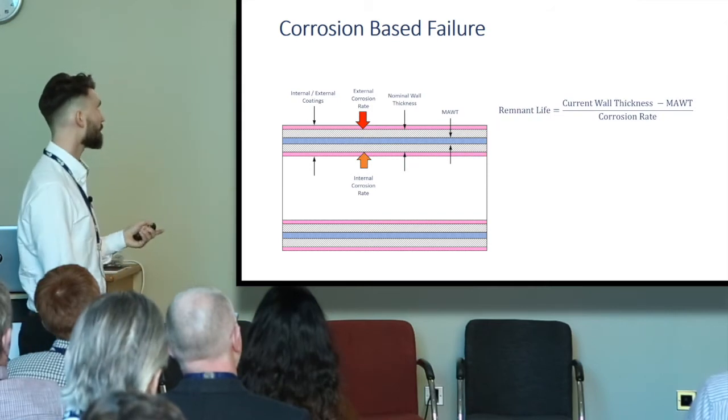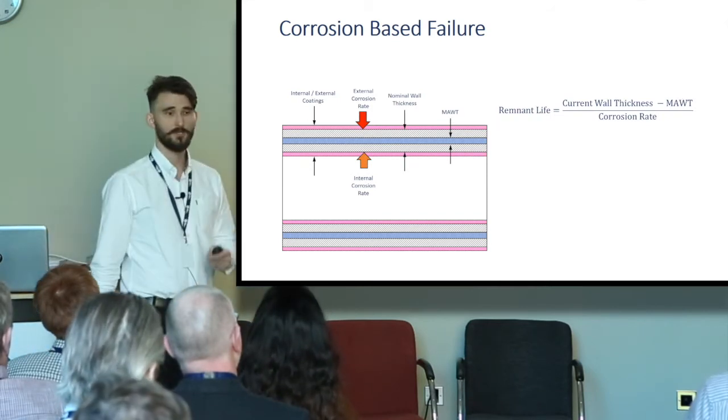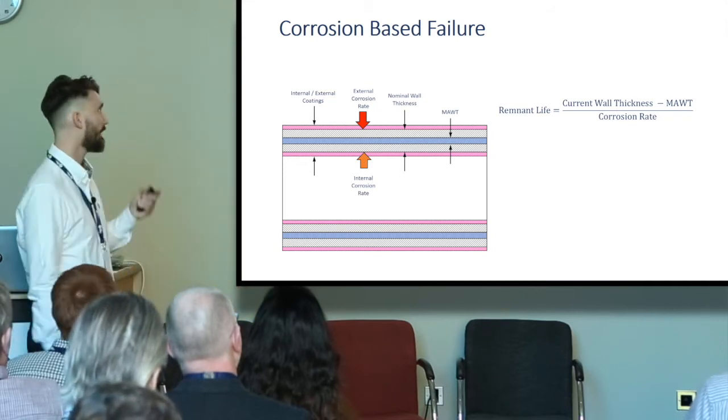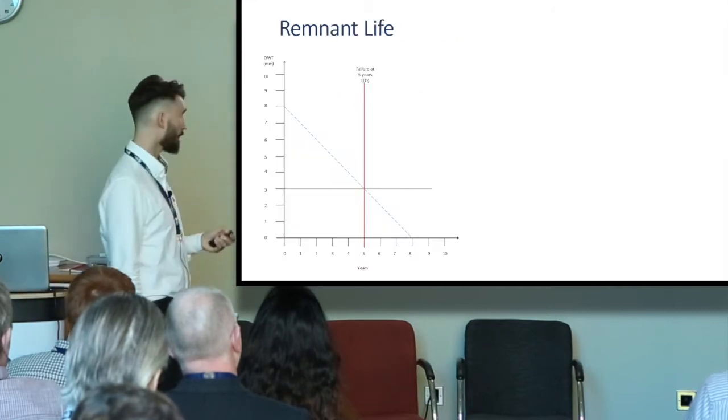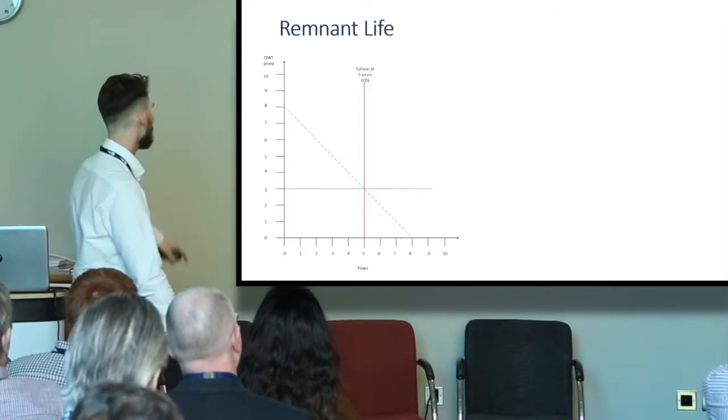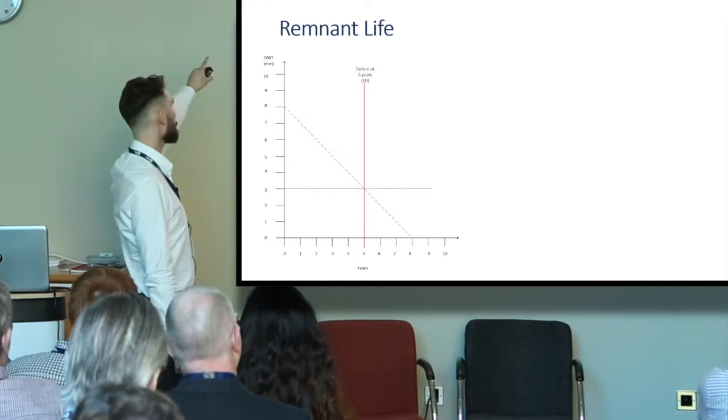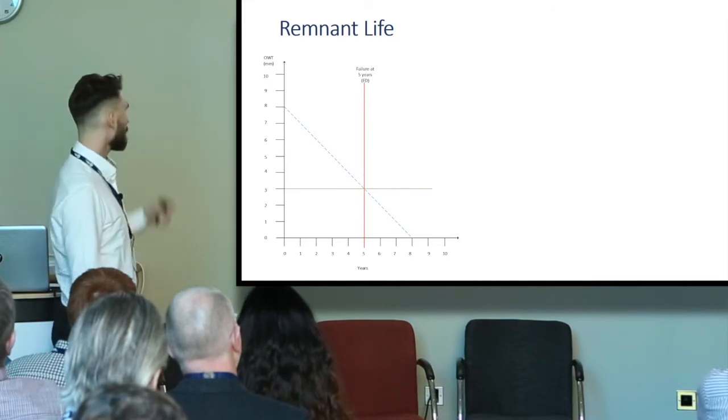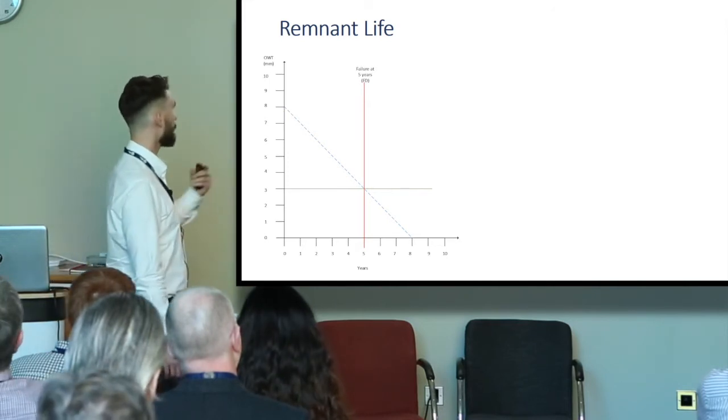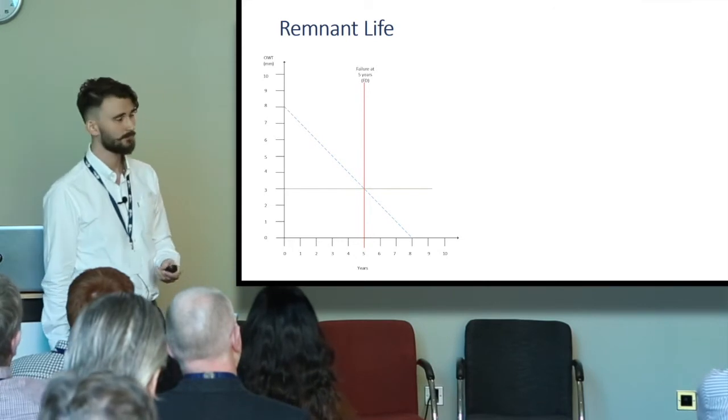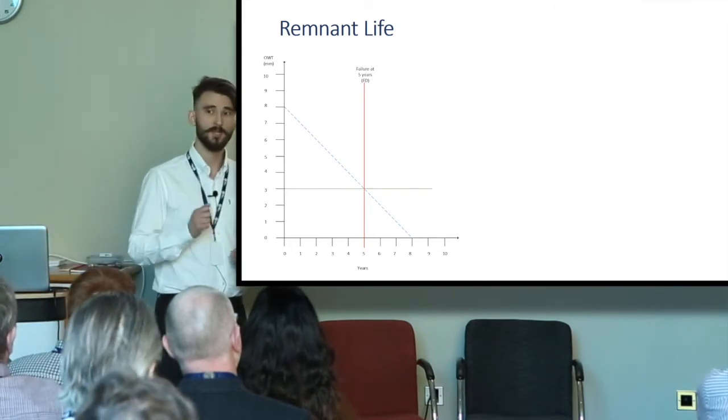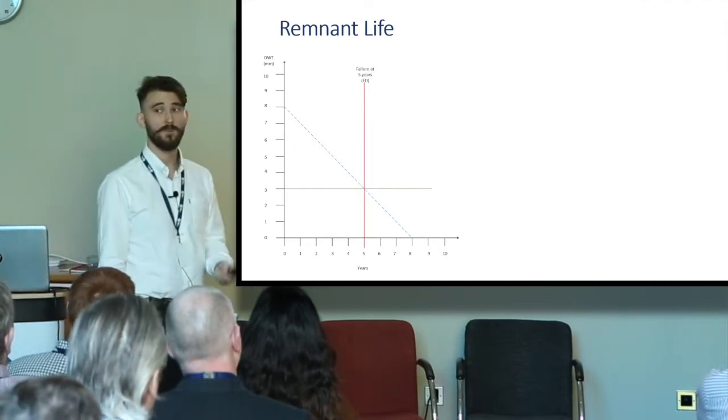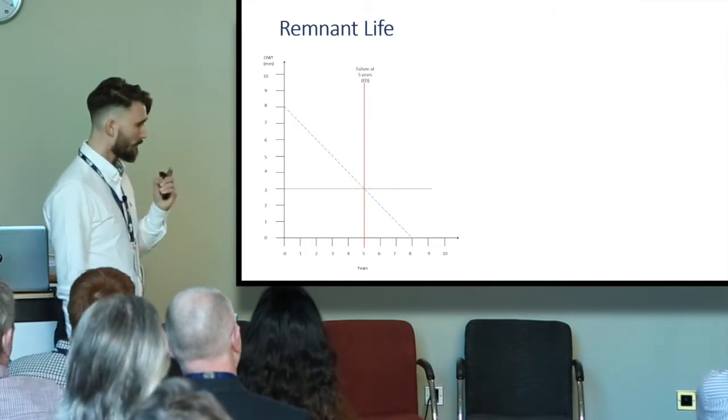What we usually do is a remaining life or remnant life calculation where we take the current wall thickness, take away the failure criteria, and divide that by corrosion rate. Plotted on a graph, let's say we start with eight millimeters wall thickness, we're corroding at one millimeter per year, failure criteria is three millimeters, we'll get there in five years. Great. But remember, we're actually more likely to not roll a seven, so it's probably more likely that it will not fail at five years. Why is this?